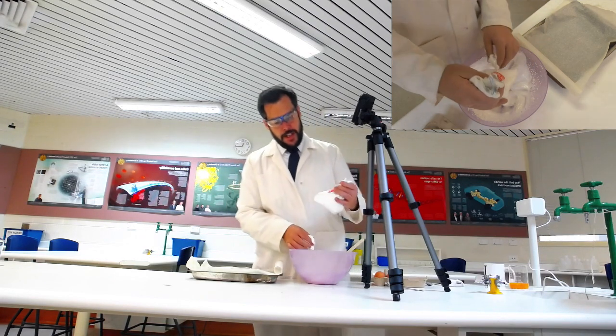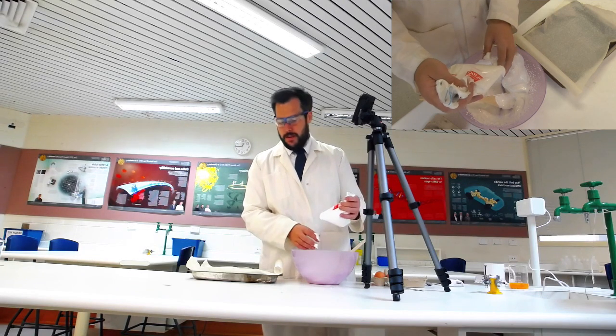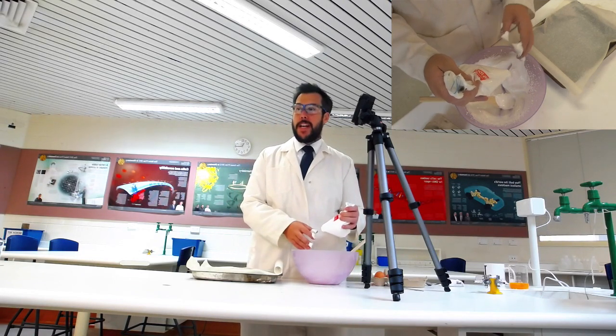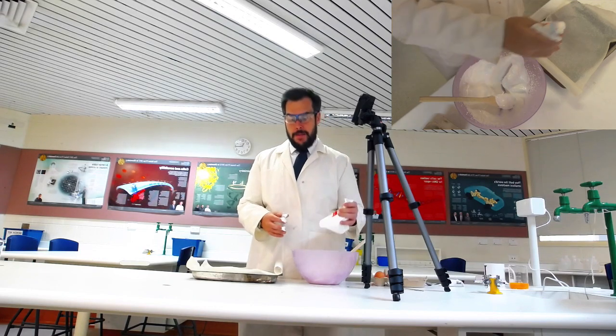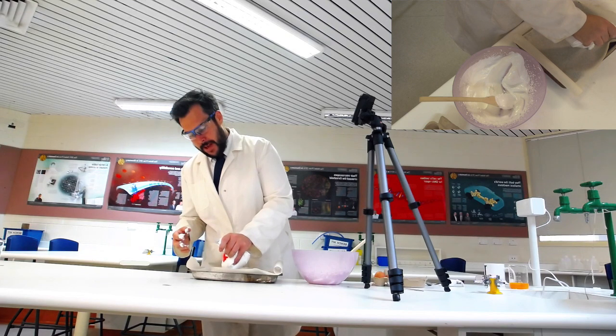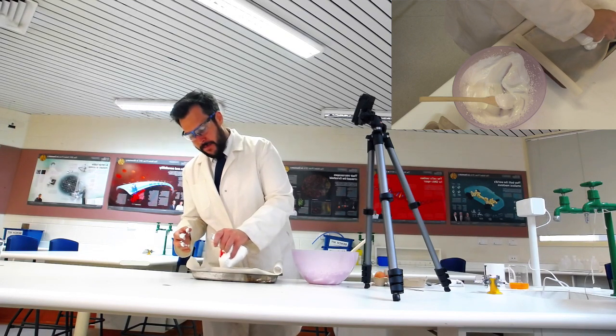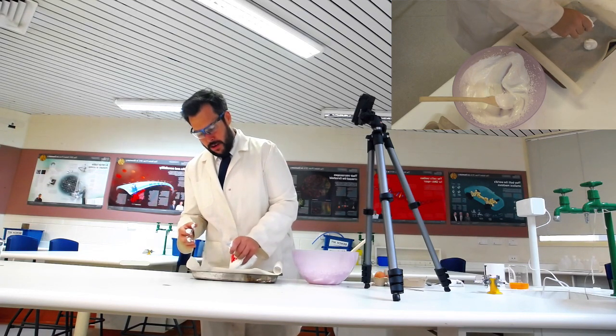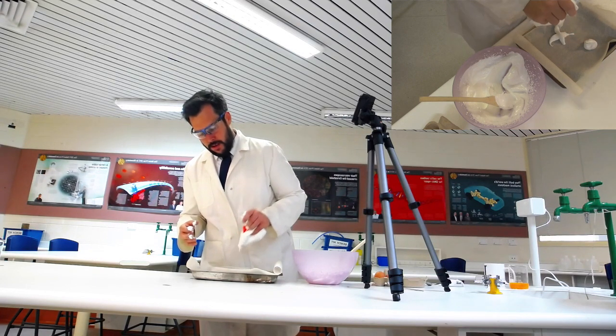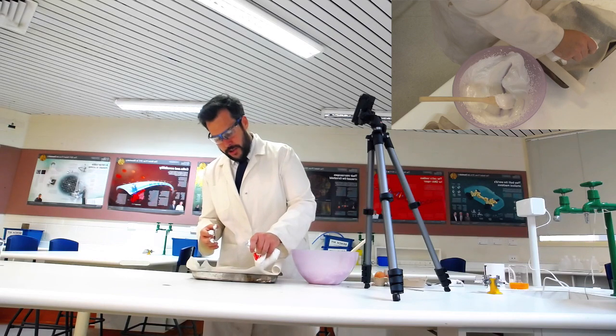This will allow us to pipe the meringue onto the baking paper. When you're ready, you can pipe the meringue onto the paper. Experiment with making different shapes, such as swirls, crosses, or just circles.